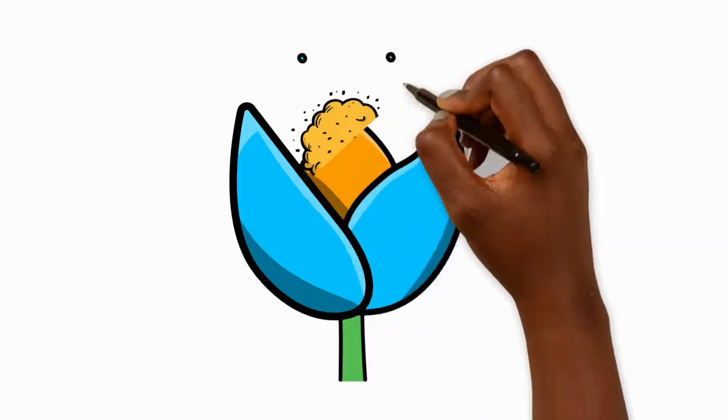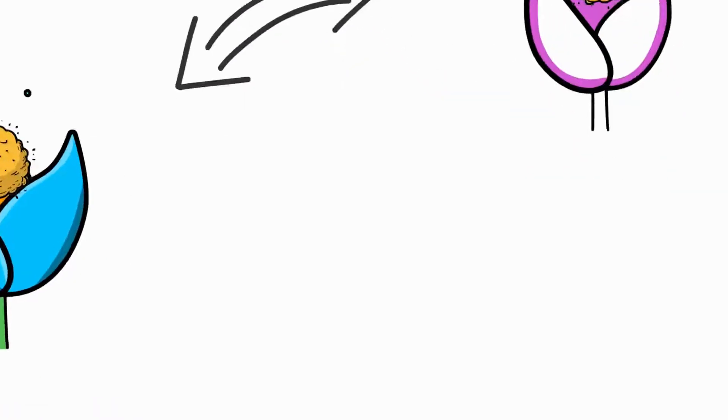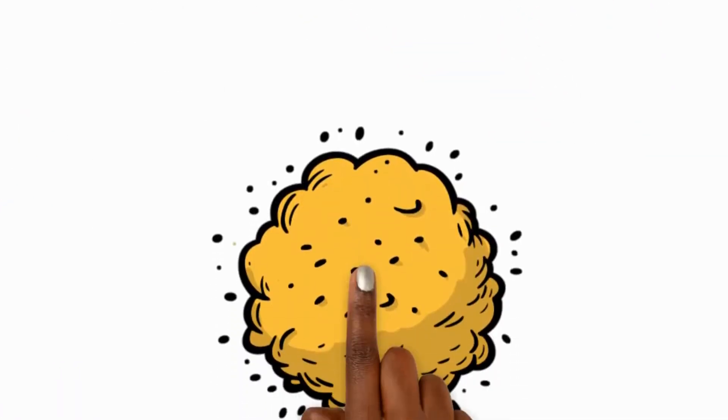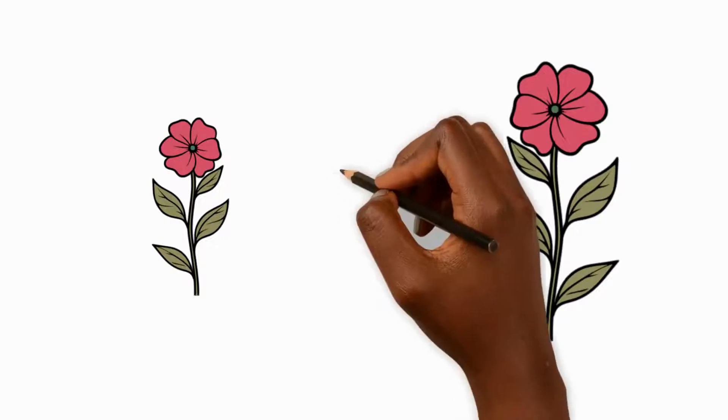Pollination is when pollen moves from the flower's male part to its female part. Tiny pollen is a yellow powder that has a big role. It helps create new plants. But how does pollen move between flowers?